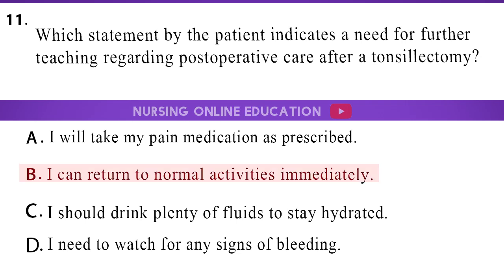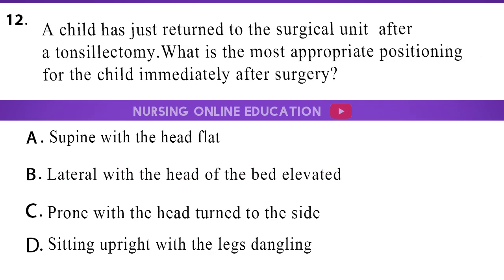The answer is option B: I can return to normal activities immediately. A child has just returned to the surgical unit after a tonsillectomy. What is the most appropriate positioning for the child immediately after surgery? A. Supine with the head flat. B. Lateral with the head of the bed elevated. C. Prone with the head turned to the side. D. Sitting upright with the legs dangling.